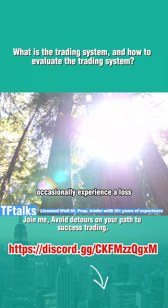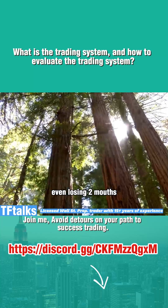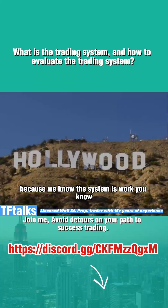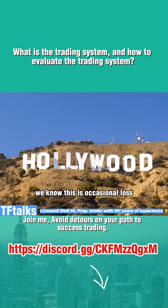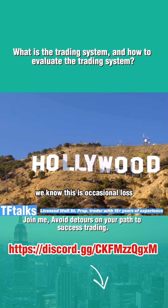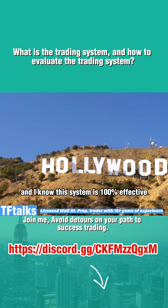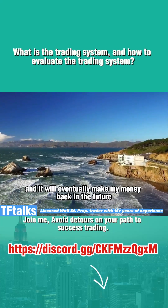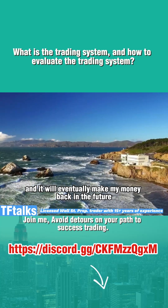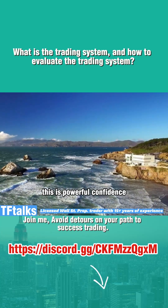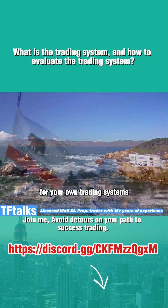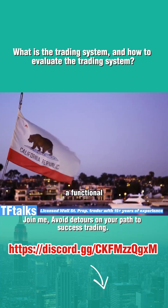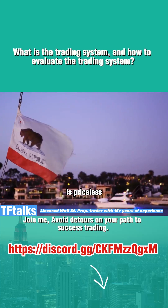Occasionally experiencing a loss, even losing two months, we will not panic, because we know this system works. We know this is an occasional loss, and this system is 100% effective — it will eventually make our money back in the future. This is powerful confidence in your own trading system. To every single trader, a functional, effective trading system is priceless.